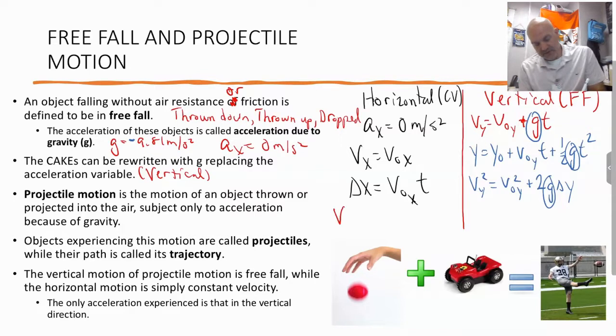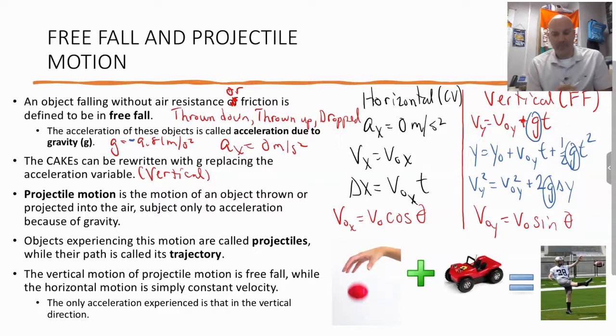Now, if we do projectile motion, the initial velocity in the x direction is v o cosine theta, and the y direction is v o sine theta. So step one is often breaking apart the initial velocity vector into components and then figuring out from there. All right. So let's look at an example.